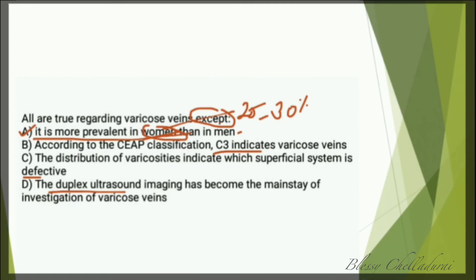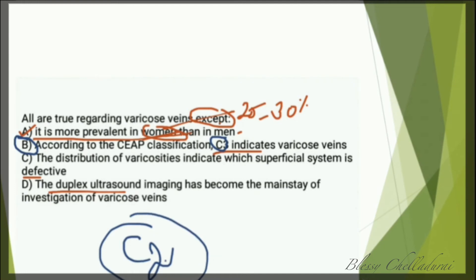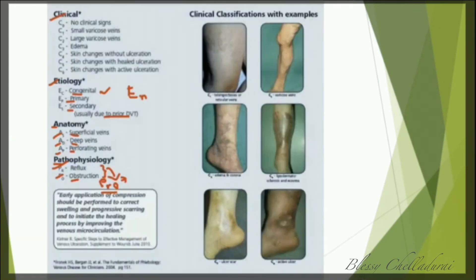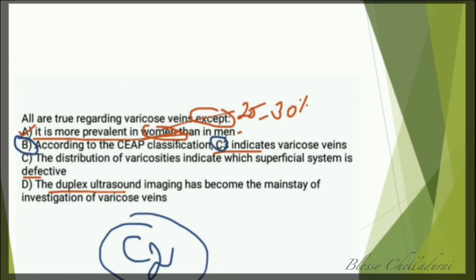Looking at option B: according to the CEAP classification, C3 indicates varicose veins — this is a false statement. C3 indicates edema, not varicose veins. C2 indicates varicose veins and C2R indicates recurrent varicose veins. Therefore, option B is the answer — the false statement.